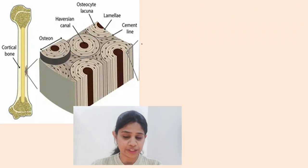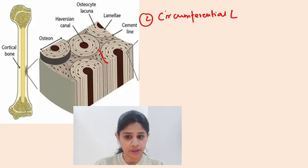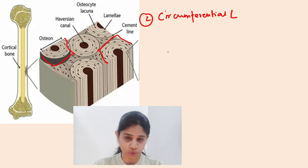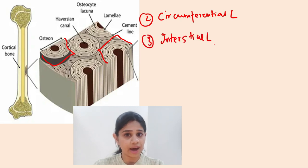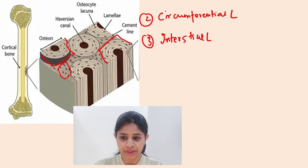The second type of lamellae is the circumferential lamellae, which surround the outer and inner aspects of the cortical bone. The third type, interstitial lamellae, are types of lamellae which surround both the circumferential as well as the concentric lamellae, filling the areas in between.